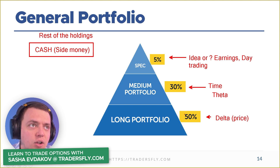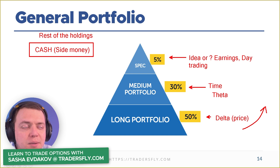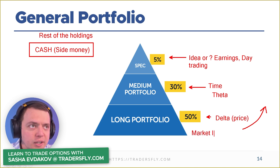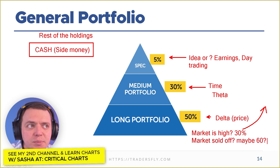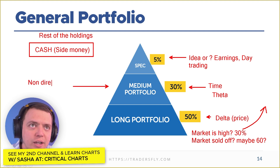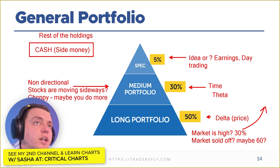These values will change from time to time. For the long portfolio at 50% — we're making money when stock prices head higher. When do we want to be more long invested? Probably after a market crash. So when the market crashes, we want to start ramping that number up. If we're a little toppy, we'll ramp it down. If the market is high, maybe 30%; if the market sold off, maybe 60%. You start tweaking these numbers depending on the environment. If stocks are more stagnant or moving sideways, maybe you do more non-directional, theta-based trades.